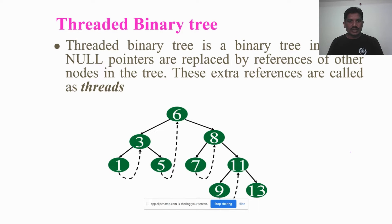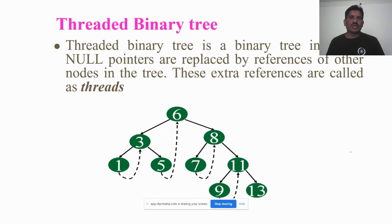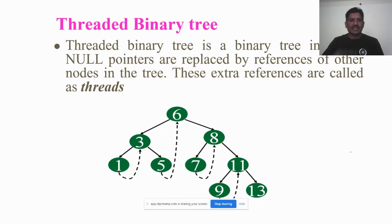In this example, see how these nodes have been connected — how the null pointer nodes are referenced to the other nodes. Because if one node is having the left pointer and right pointer: node 5 is having left and right pointer, node 7 is having left and right pointer, node 9 is having left and right pointer, and node 13 is also having left and right pointer. But how these nodes are referenced to other nodes is what is called the threaded binary.